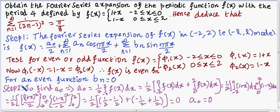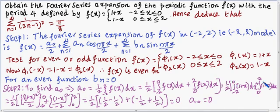Step 2 is to find a₀. On the interval (−2, 2), a₀ = (1/2) ∫₋₂² f(x) dx. Since f(x) is defined on two sub-intervals, this splits as: (1/2)[∫₋₂⁰ f(x) dx + ∫₀² f(x) dx] = (1/2)[∫₋₂⁰ (1+x) dx + ∫₀² (1−x) dx].